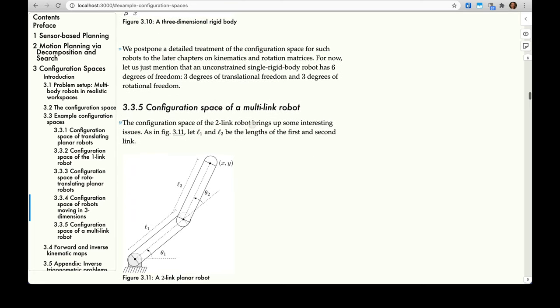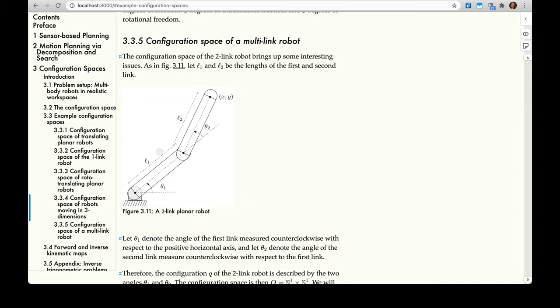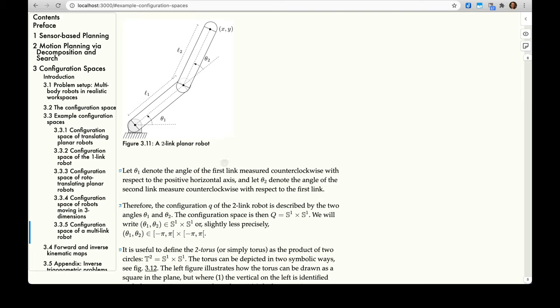Configuration space of a multi-link robot. Configuration space of the two-link robot brings up some interesting issues. As in figure 3.11, let L1 and L2 be the lengths of the first and second link. Let theta_1 denote the angle of the first link measured counterclockwise with respect to the positive horizontal axis. And let theta_2 denote the angle of the second link measured counterclockwise with respect to the first link. So theta_2 is measured with respect to the first link. That's important. Some conventions will measure it also from the horizontal, but it's useful in applications like this to actually use the angle with respect to the other link because that's something that's more easily measured than with respect to the horizon.